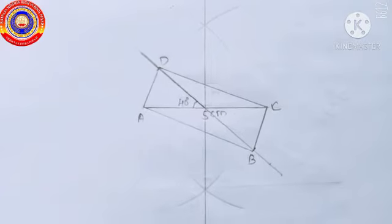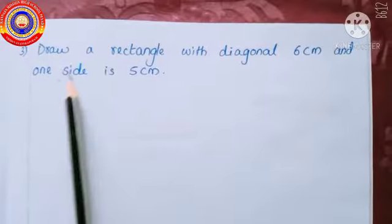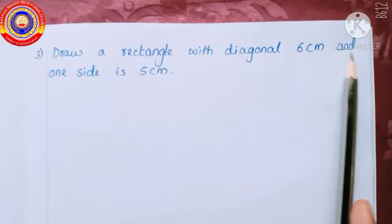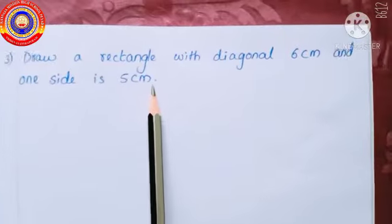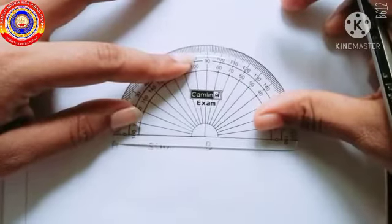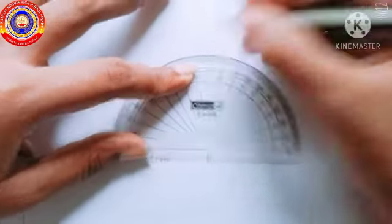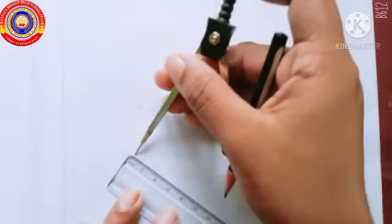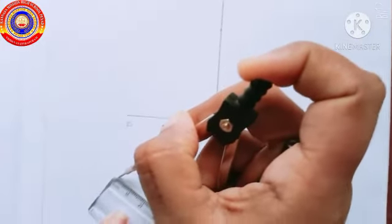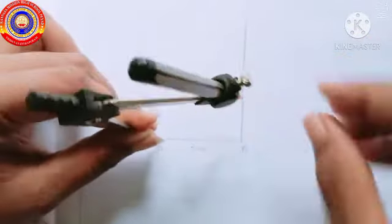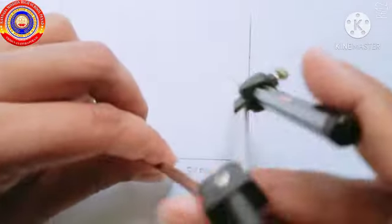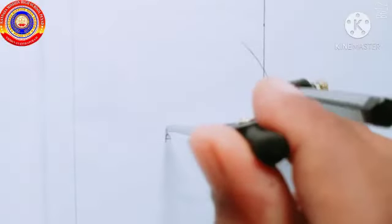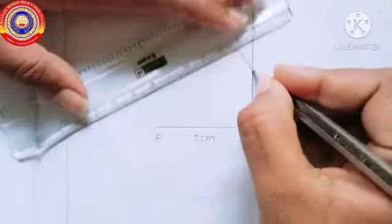Next question: how do we draw a rectangle with diagonal 6 centimeters and one side 5 centimeters? First draw a line of 5 centimeters and name it AB. Place the protractor at point B and measure 90 degrees and draw a perpendicular line. Then draw an arc with center A and radius 6 centimeters using a compass. Place the compass at point A and draw an arc which cuts the perpendicular at C, then join these two points.